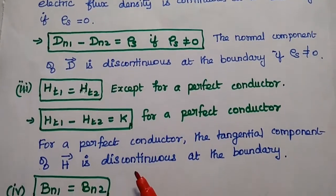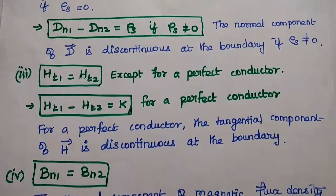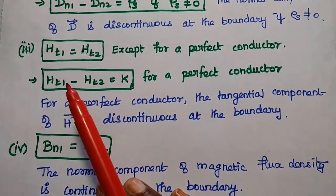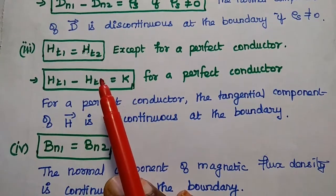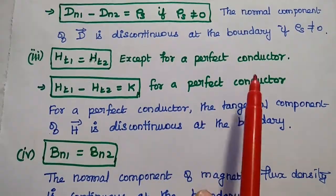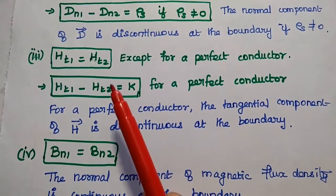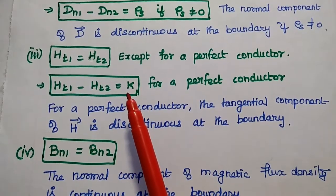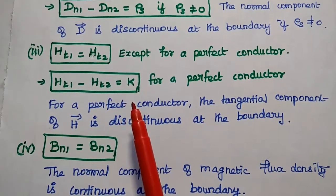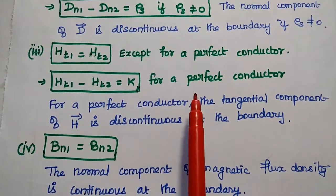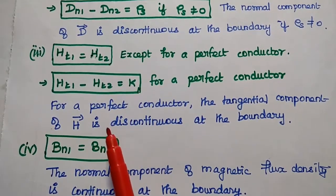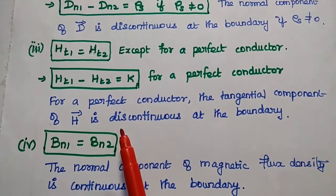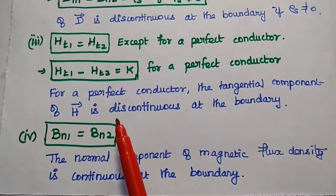Next are the boundary conditions for the magnetic field. The tangential component of magnetic field intensity H is continuous at the boundary, except for a perfect conductor. If the medium is a perfect conductor, then the tangential component of the magnetic field intensity is not the same — that means it is discontinuous at the boundary.